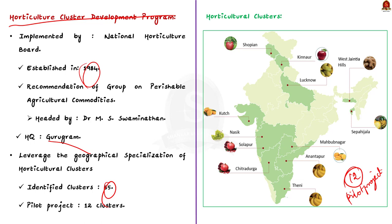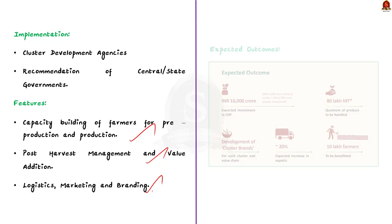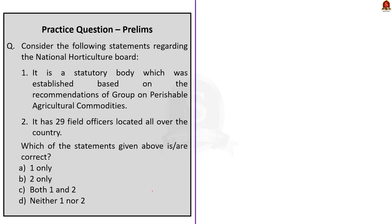Key features of the CDP include capacity building of farmers for pre-production, post-harvest management and value addition, logistics, marketing, and branding. Expected outcomes include development of cluster brands, 20% increase in exports, benefits to 10 lakh farmers, and the ability to handle 80 lakh metric tons of produce. In this news article discussion, we saw in detail about horticulture, its current status, and two important schemes dedicated to improvement of horticulture in India.